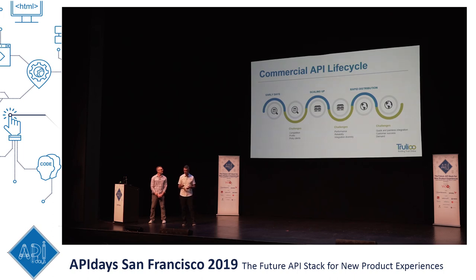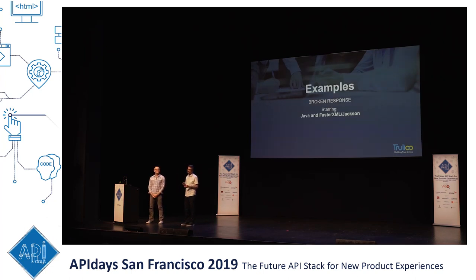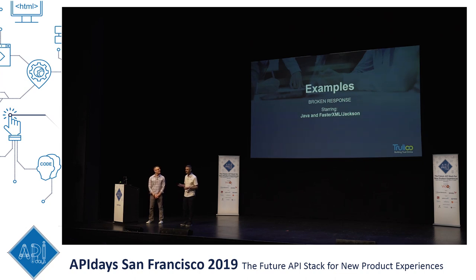So that's what we're going to talk about today — the challenges with rapid distribution. We prepared some examples from real life. We want to present them in the context of rapid integration packages. Starting with Java and Jackson — how many of you know what Java is? And what is Jackson? How many of you are happy customers of Java?